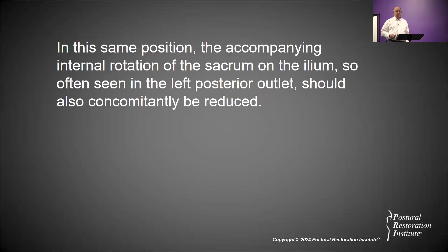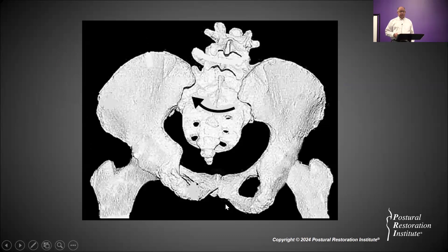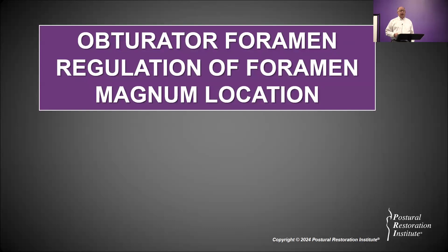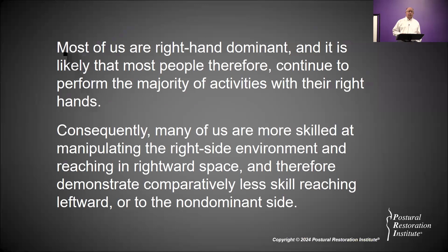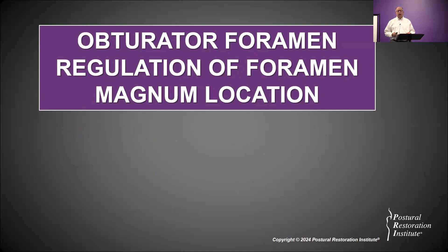When the obturator foramens are positioned by in-range femoral flexion — 90 degrees, as in a long-seated position — the forward rotation, anterior tip, and external rotation so often seen at the left ilium in humans should all be reduced. The relationship between the obturator foramen and the foramen magnum is one-to-one. The communication between the two obturator foramina and the foramen magnum is one-to-one.